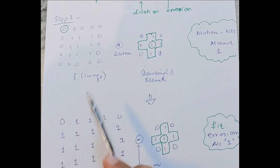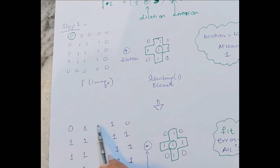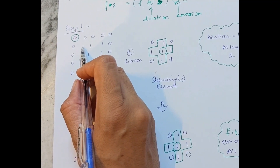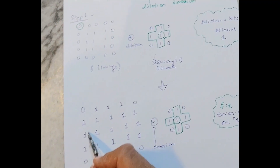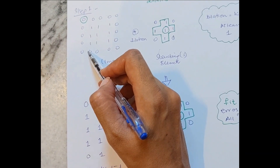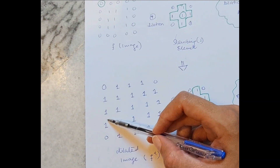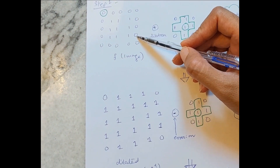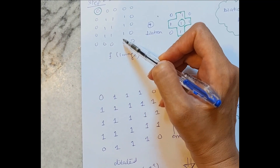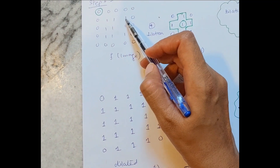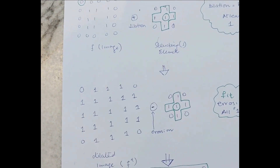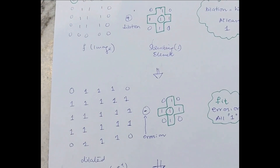Placing the structuring element on ones causes all surrounding zeros to convert to ones. In the second row, positions with a one on any side also convert to one because dilation only needs hits. The top three zeros and the bottom three zeros also convert to ones. All central elements that were already one remain one. This image represents the dilated image after the dilation step of the closing operation.